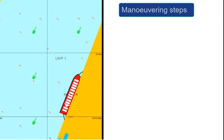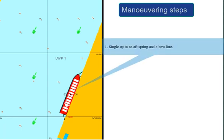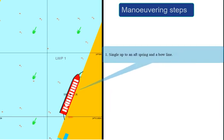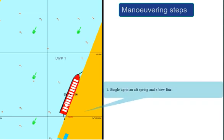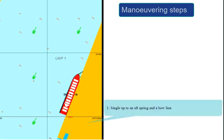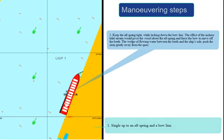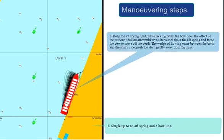This maneuvering can be divided into 4 steps. Step 1: Single up to an aft spring and a bow line. Step 2: Keep the aft spring tight,